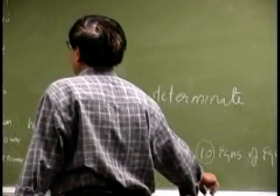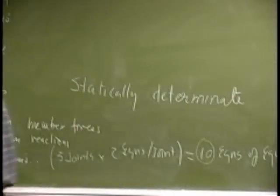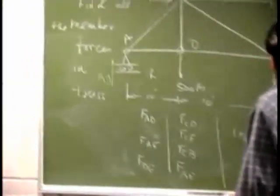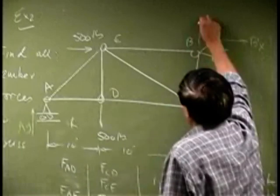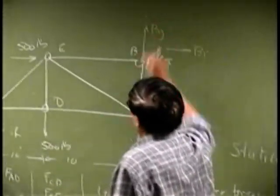Now, the next thing would be to look at the reactions. So there is a reaction here that is Ay. There is a reaction here which is Bx. There is a reaction here that is By.